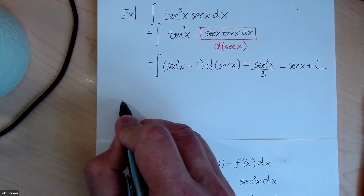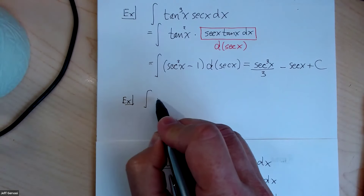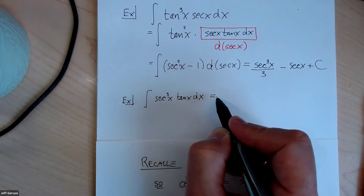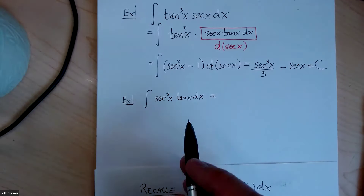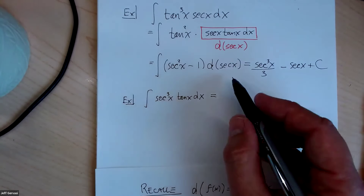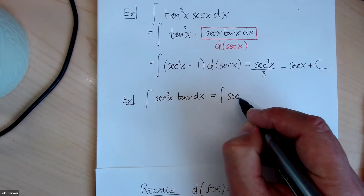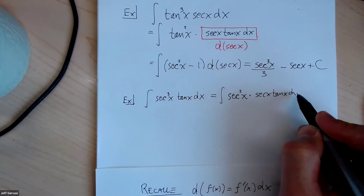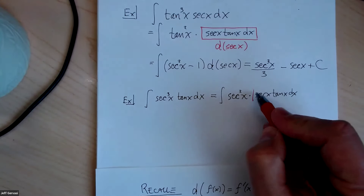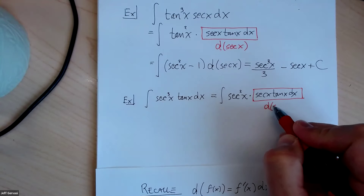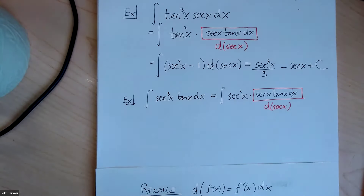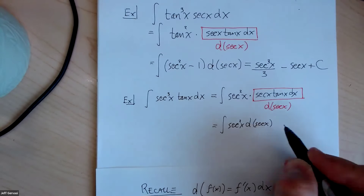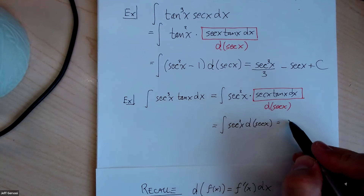Suppose it had been secant to the third times tangent of x. Again, the power of the tangent is odd, so I'll simply break away one of the secants, take it and the tangent, and pair them with the dx. Now I can just simply read off my answer directly: the antiderivative of secant squared d(secant) is secant to the third over three, plus a constant.